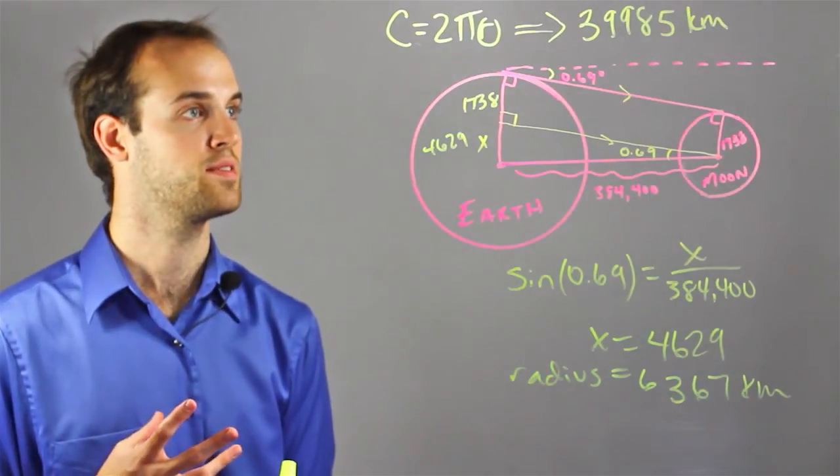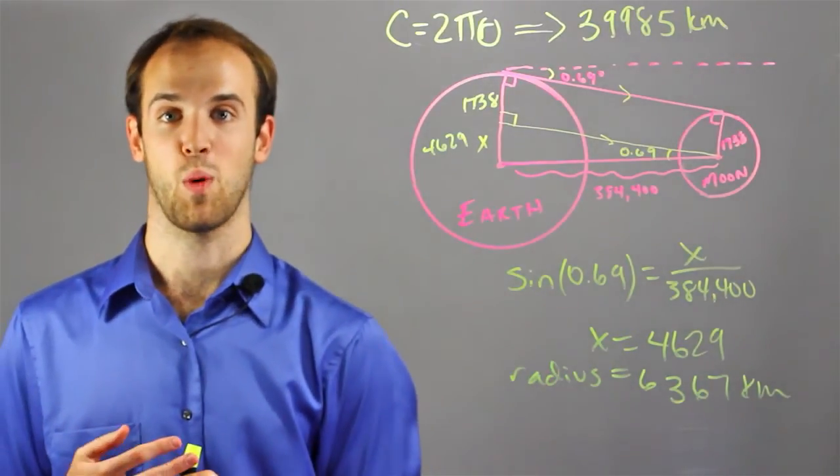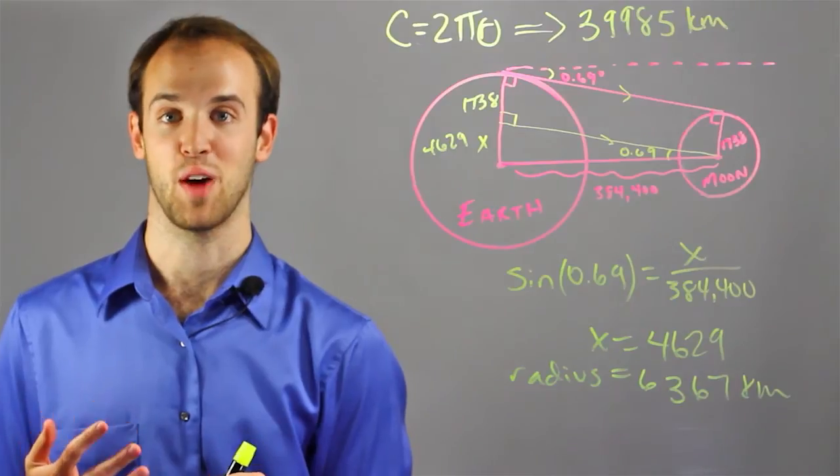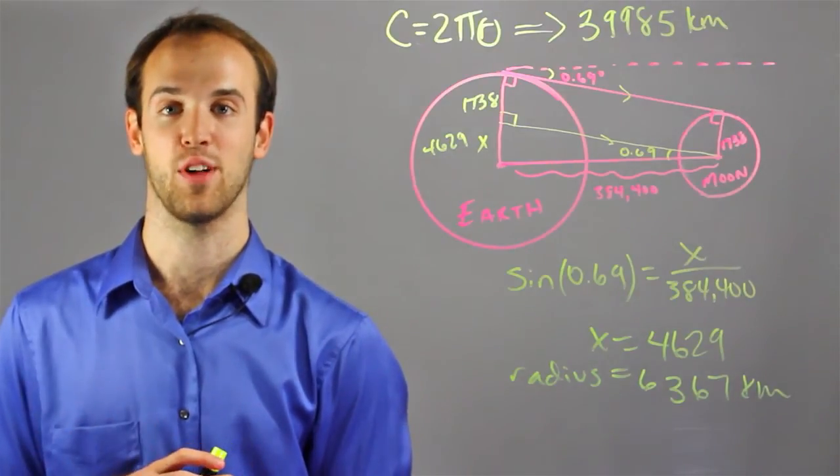So there's our circumference. So I'm Drew Moyer, and this is how to find the circumference of the Earth using the angle of the moon.